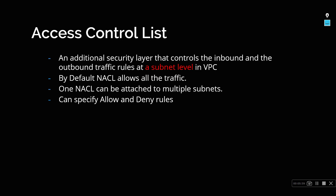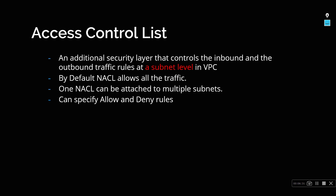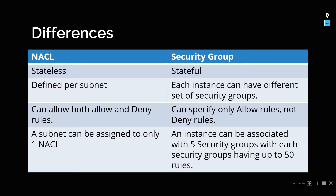One NACL can be attached to multiple subnets if all those subnets share the same security principle. In NACL you can specify both allow and deny rules — you can say you want to allow this and deny a certain IP address. This is contrary to security groups, where you can only specify allow rules and cannot specify deny rules.